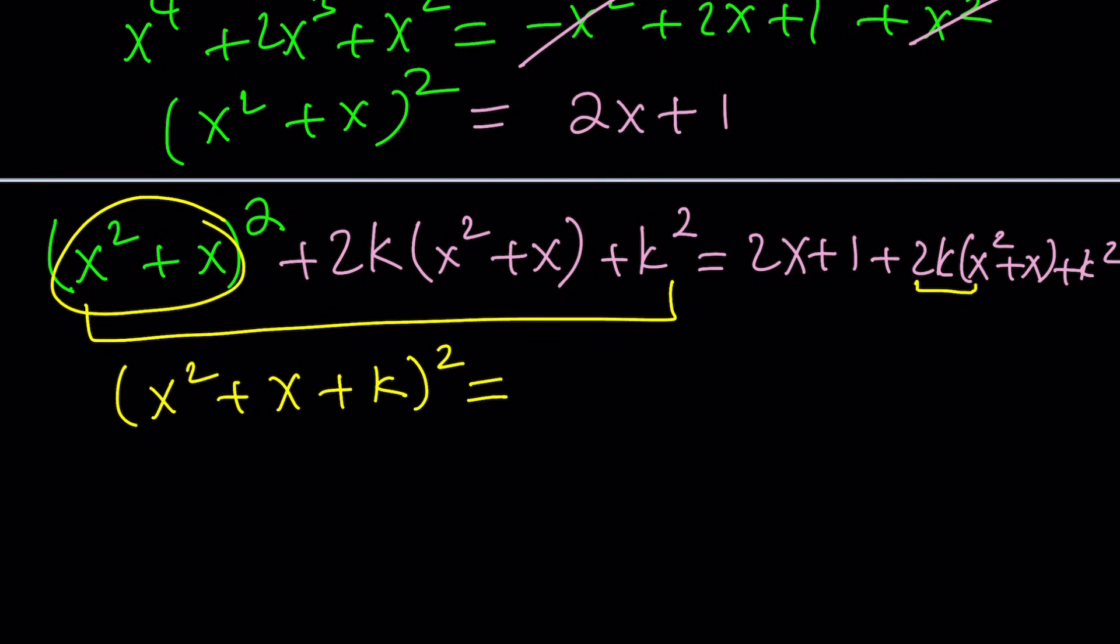It is x squared plus x plus k quantity squared. If you don't see that, call this m, whatever. You'll get m squared plus 2k m plus k squared. And I'm hoping that you can recognize it as m plus k quantity squared, which gives you the same thing with more work. But substitution is always good if you don't get this right away. Now, let's rearrange the terms on the right-hand side. We get 2k x squared. And we have 2k x plus 2x, which is 2k plus 2x. And then I have plus k squared plus 1.